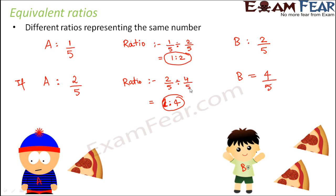So 2 is to 4 is definitely a different ratio than 1 is to 2, but basically 2 is to 4 represents the same thing as 1 is to 2. How can you write 2 is to 4?